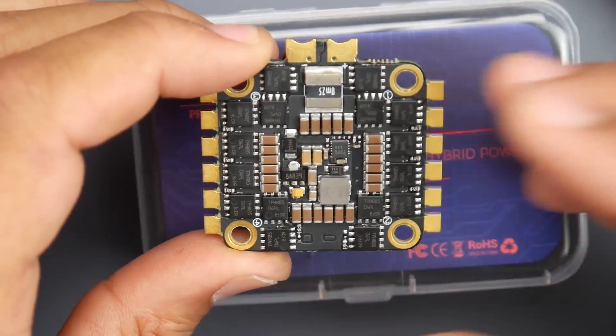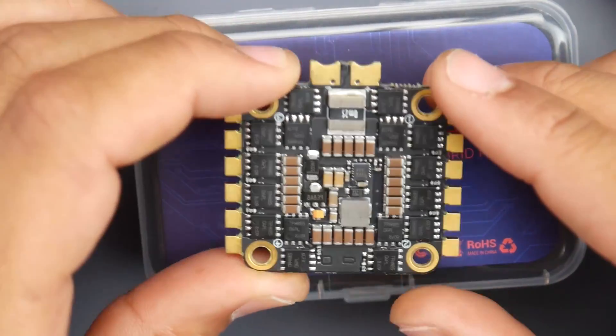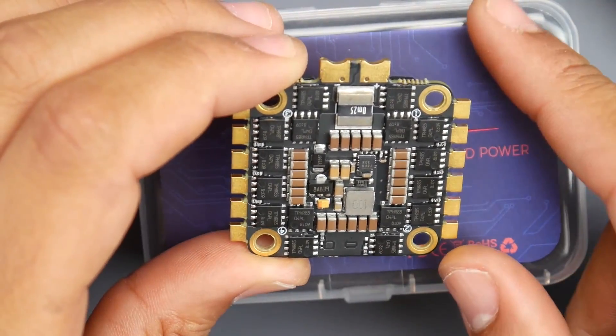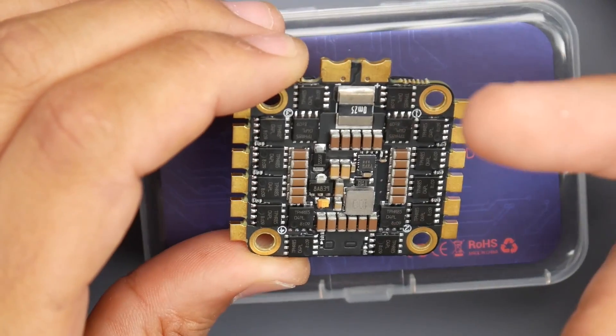Now they are using two N-channel MOSFETs which is something you want to see. For example the Mamba four-in-one ESC, the 30 by 30, they're using one PNP one NPN. If you use two NPN it's much more efficient theoretically and it is better overall and that's what they're doing here.